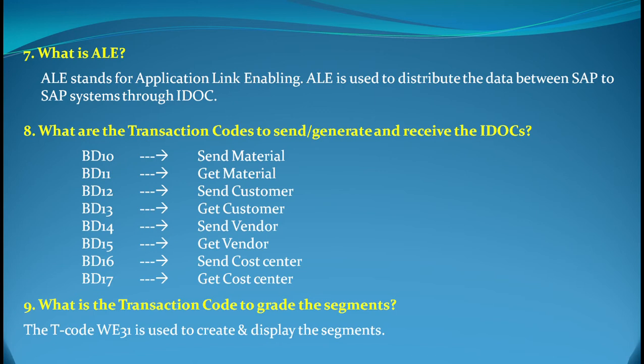The seventh question is: what is ALE? ALE stands for Application Link Enabling, which is used to distribute data between SAP and non-SAP systems, or SAP to SAP, through IDocs. Basically, ALE is the one which enables IDocs to transfer data from one system to another.